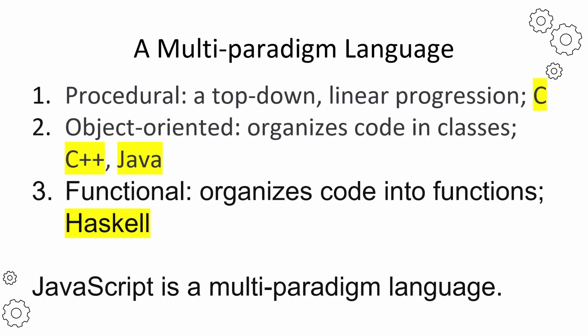Paradigm means different styles of coding. Common paradigms include: number one, procedural programming, where you write code in a linear fashion from top to bottom — the C language is a typical procedural programming language. Number two, object-oriented programming, where code is organized in classes — we have C++ and Java in this paradigm. And last but not least, functional programming, which organizes code into functions — Haskell is a typical functional programming language. JavaScript is a multi-paradigm language, which means you can write your code in any style you like.